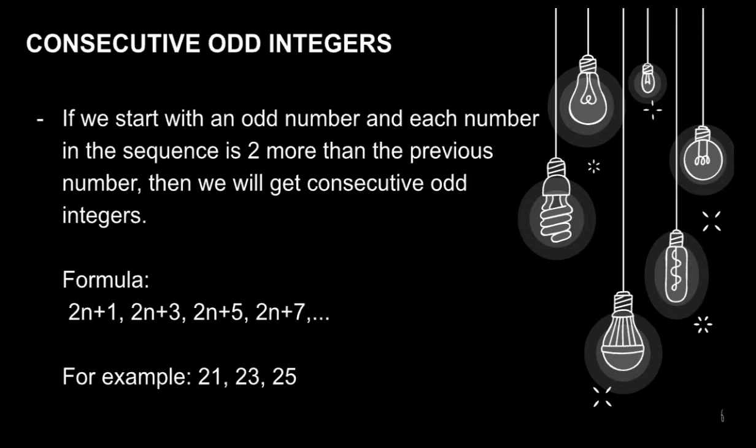meron din tayong consecutive odd integers. So dito, if we start with odd number, and each number in the sequence is more than the previous number, then we will get consecutive odd integers. Ang formula ay 2n+1, 2n+3, 2n+5, 2n+7, and so on and so forth. For example, 21, 23, and 25.